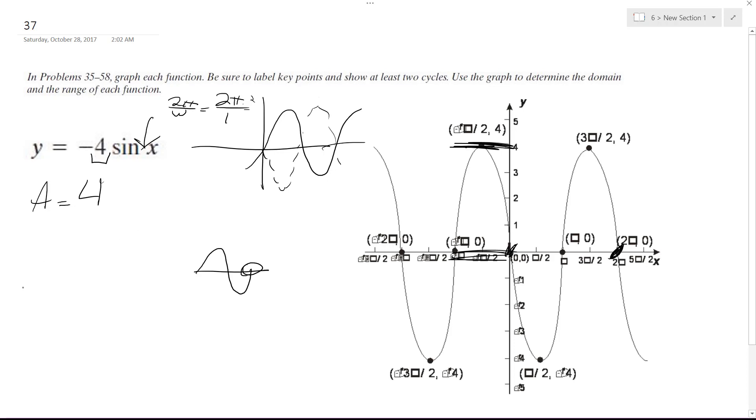It's got a domain, domains negative infinity to infinity, interval notation, and the range is, you're going to use brackets from negative 4 because it's inclusive, meaning it's a part of it, from negative 4 to 4.